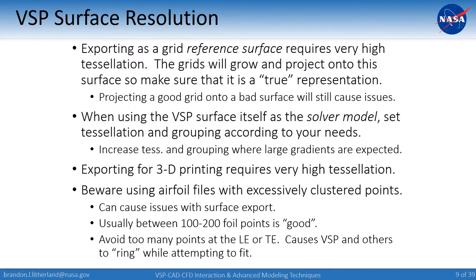If you're using the VSP surface itself as the solver model, set your tessellation and grouping according to your needs. Increase tessellation and group points where you expect large gradients — for example, if you're running a wing in isolation and want better capture of the downwash at the wingtip, improve your tip grouping. For 3D printing, use really high tessellation for a much better source surface. Be aware that airfoil files with excessively clustered points, especially at the leading edge, can cause surface ringing. Best practice is to use between 100 and 200 foil points.